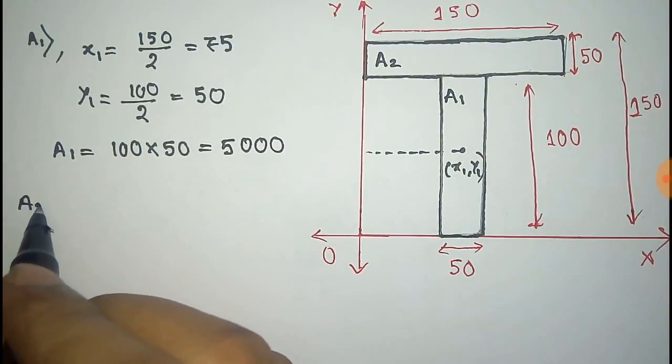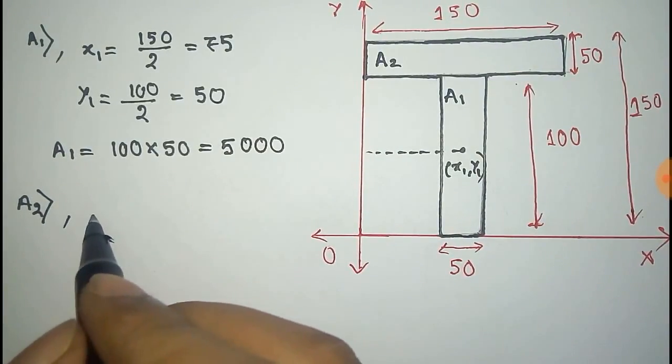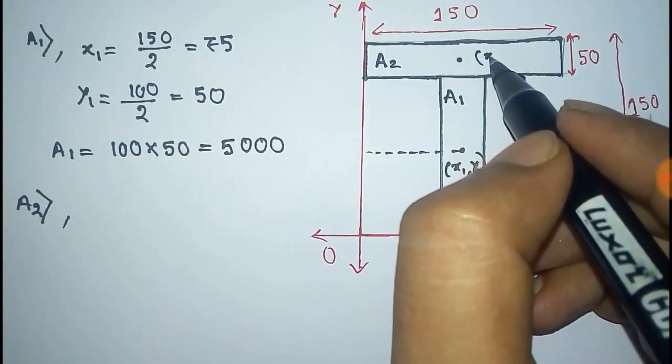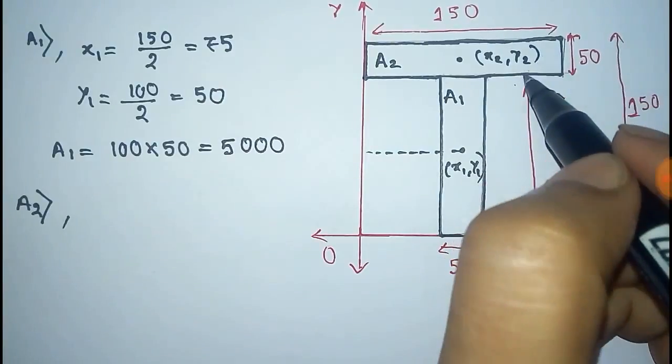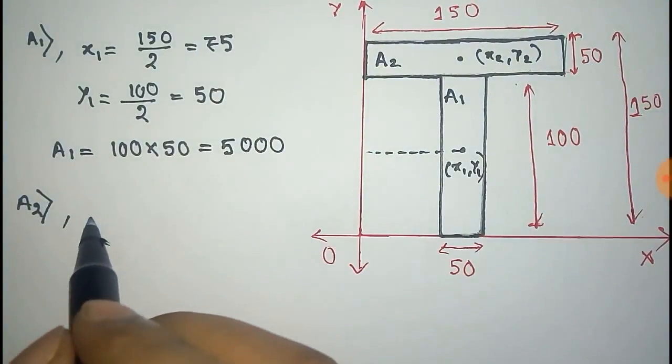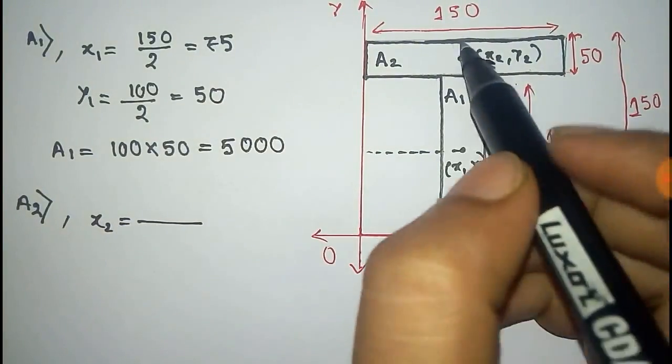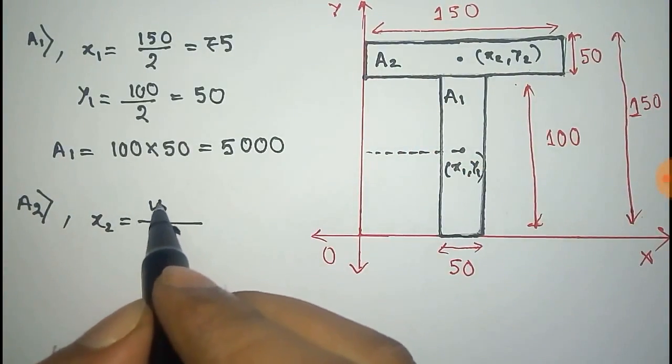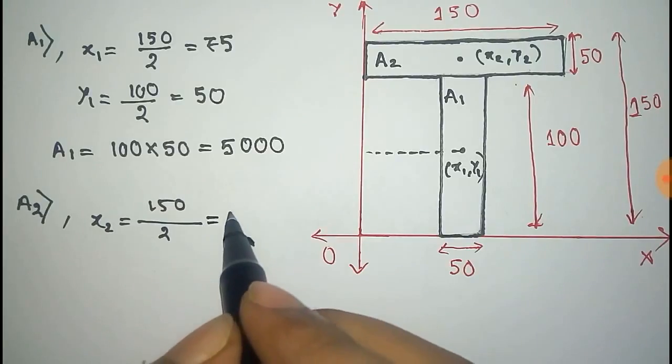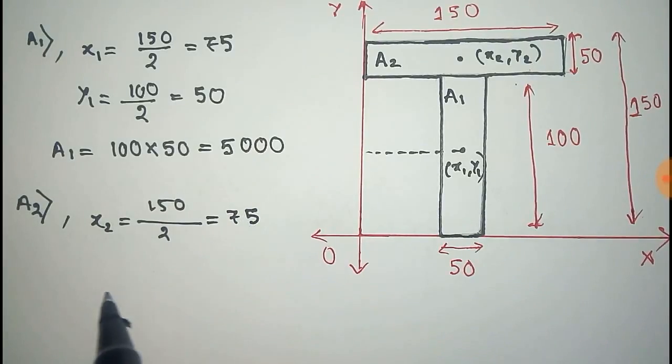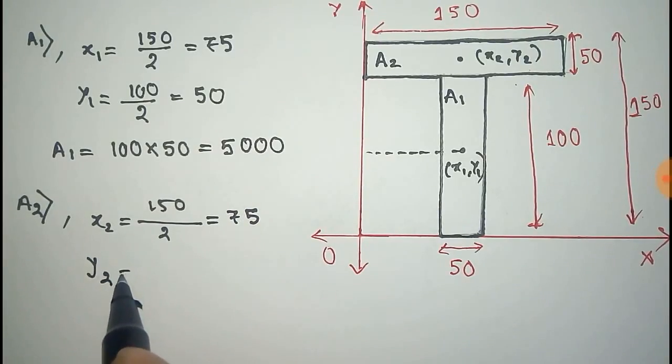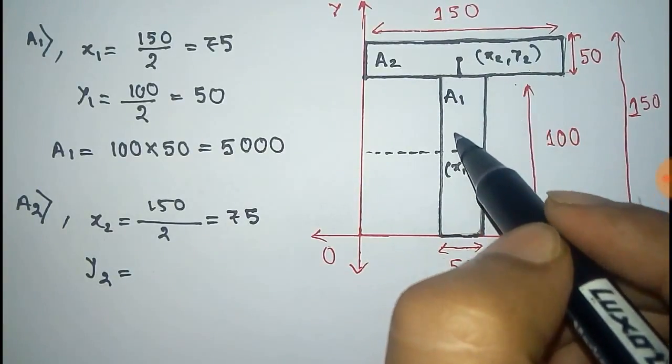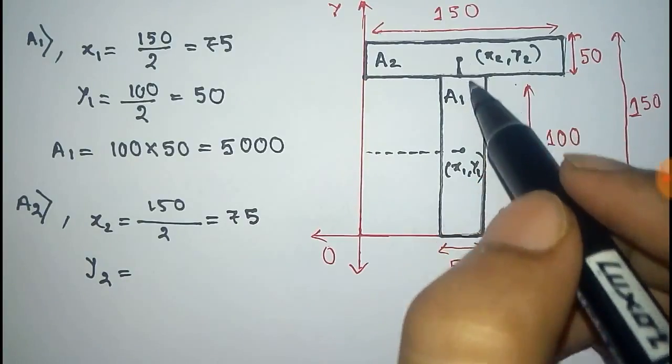Now for the A2 rectangle, we take the center of mass located at this point, which is (x2, y2). So x2 equals the total length 150 by 2, which equals 75 units. And y2 is given by this length plus this length.